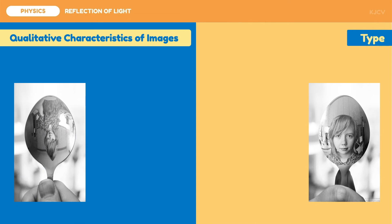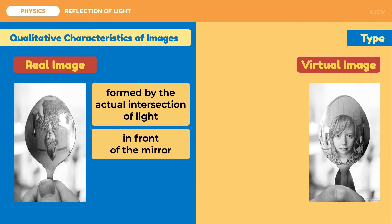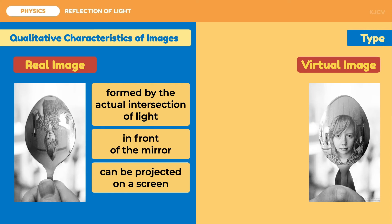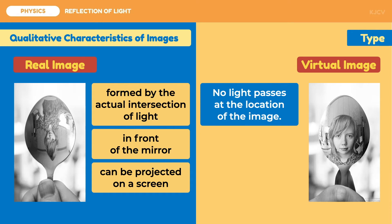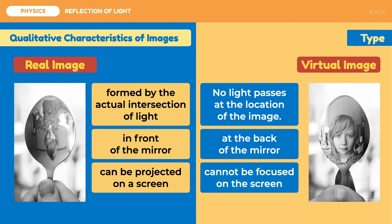The first qualitative characteristic is the type of image formed — images may be either real or virtual. This primarily describes the formation of the image based on the intersection of the light rays. The spoon acts as the mirror: the front or shallow part allows the light rays to meet, forming the image in front of the mirror, so it can be projected on a separate screen. On the other hand, the back part does not allow light to intersect, forming the image at the back of the mirror where light cannot pass through, so it cannot be focused on a separate screen.